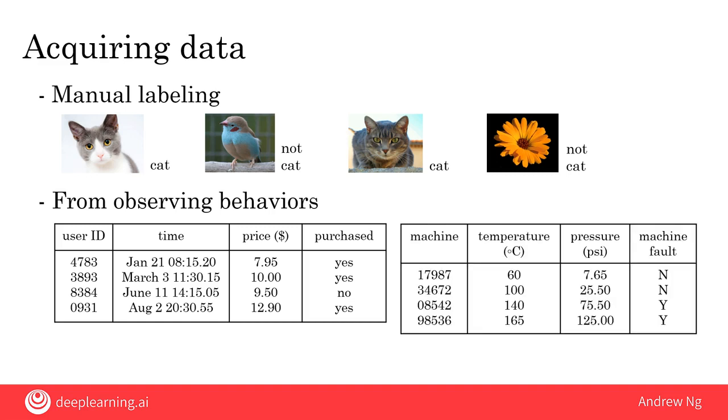This was an example of observing user behaviors. We can also observe behaviors of other things such as machines. If you run a large machine in a factory and you want to predict if a machine is about to fail or have a fault, then just by observing the behavior of a machine, you can record a dataset like this: machine ID, temperature of the machine, pressure within the machine, and then did the machine fail or not.